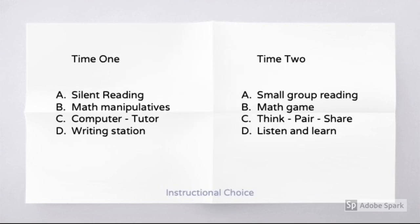Instructional choice is just that — the teacher creates a menu of two or more options for students to choose from. One way we see this used frequently is through instructional centers. It is also possible to simply give students a choice in what activity they wish to complete first; however, it's important to monitor what students are doing to make sure all of the work gets done. Instructional choice increases students' autonomy in the classroom, which is important when we talk about how to motivate students to learn.